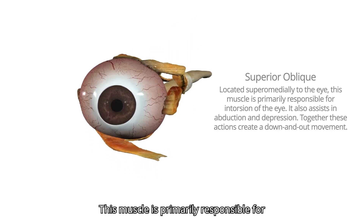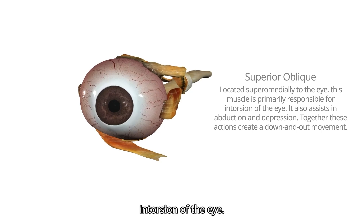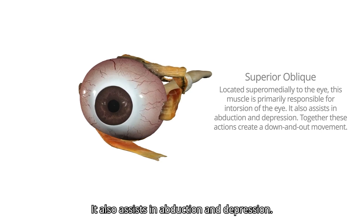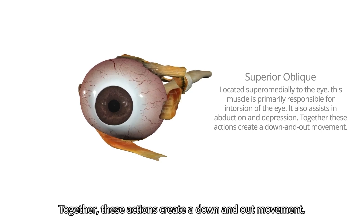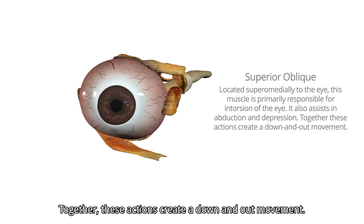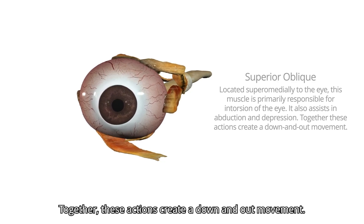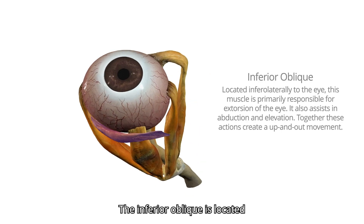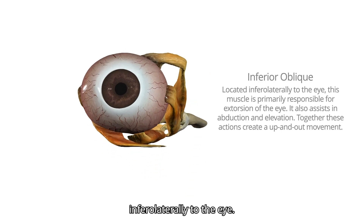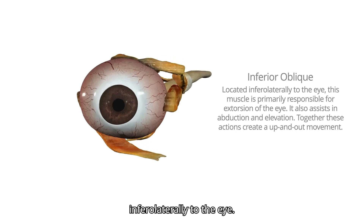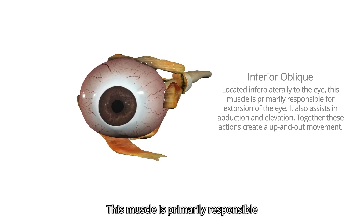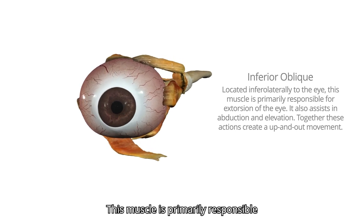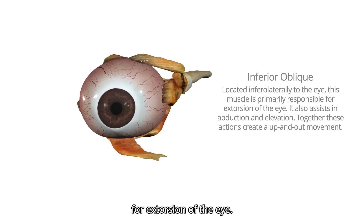The superior oblique also assists in abduction and depression. Together, these actions create a down-and-out movement. The inferior oblique is located inferolaterally to the eye. This muscle is primarily responsible for extorsion of the eye.